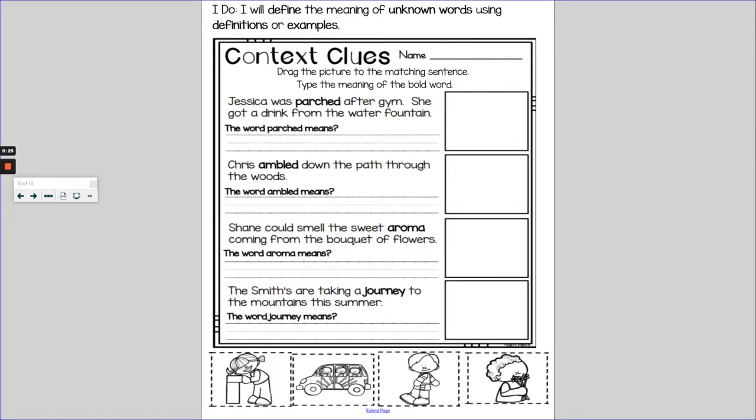So let's get started. Jessica was parched after gym. She got a drink from the water fountain. So I see that my bold word here that I'm identifying or defining is the word parched and I'm going to underline some context clues that I see. She was parched after gym. She got a drink from the water fountain. Those are context clues that can help me define this word. I have some pictures at the bottom I can use to help figure this out. So I see a girl drinking from the water fountain, a family in a van, a boy walking or doing some sort of exercise, and a person sniffing flowers. Because Jessica is drinking from the water fountain, I'm going to say this is the correct picture.